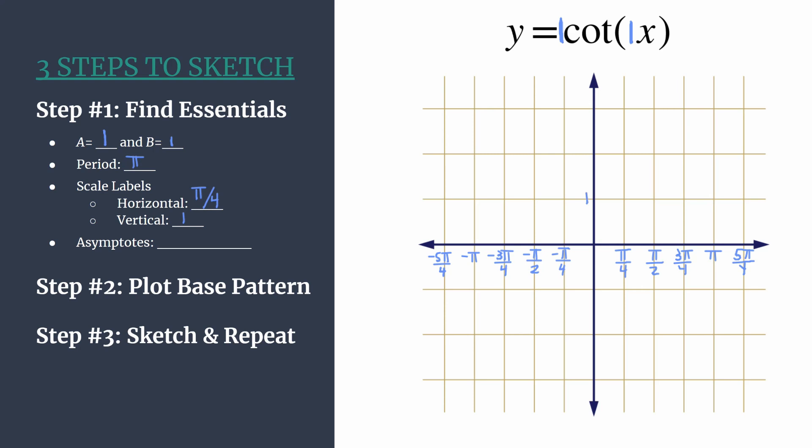Now let's label our vertical axis. Easy enough, we're counting by ones. And our grid is all set up for our graph. But before we move on to step two, where we plot our base pattern, I like to go ahead and find the asymptotes equation.